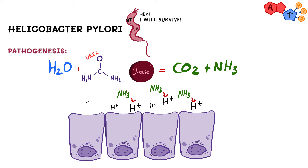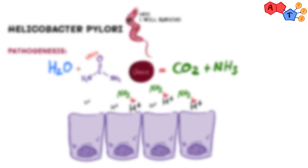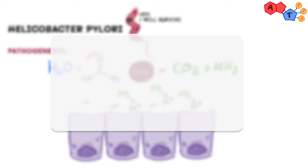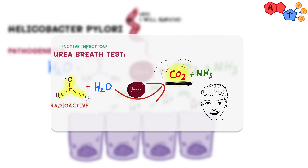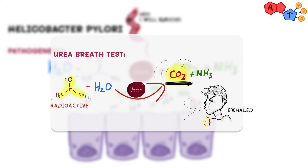The urease enzyme also helps in the diagnosis of H. pylori, specifically for active infection, by a test known as the urea breath test. The test works by giving the patient a radioactive urea in which the carbon atom is the radioactive component. If H. pylori is present in the stomach, it will break down the urea to ammonia and radioactive carbon dioxide, which the patient then exhales and we can detect.